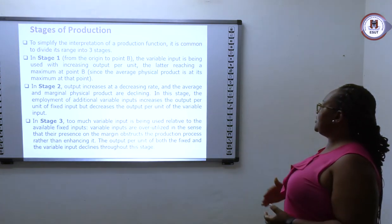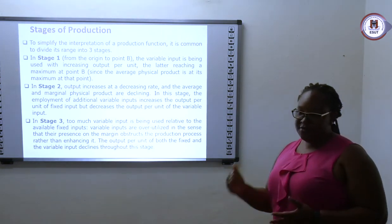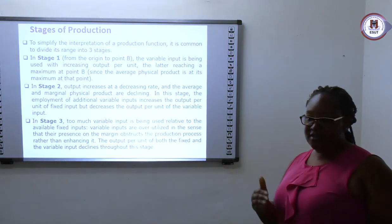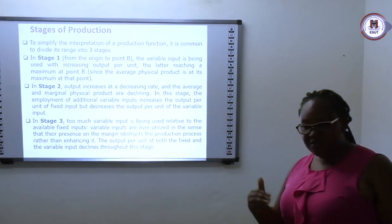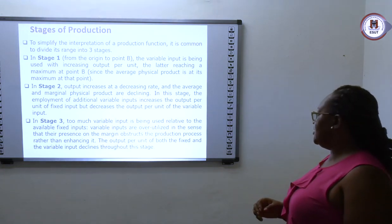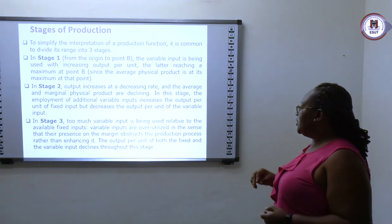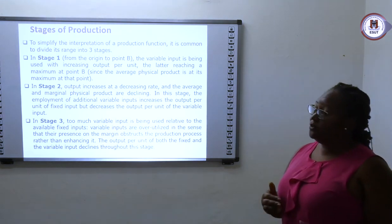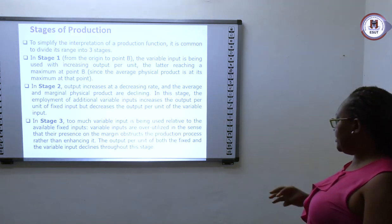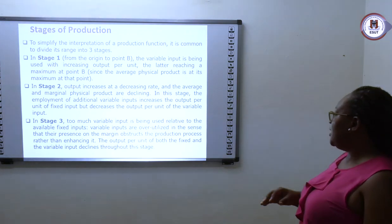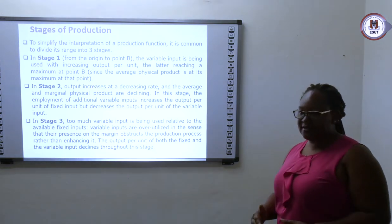In stage two, output increases at a decreasing rate. Even though output is still increasing, the rate at which it increased in stage one is not the rate at which it increases in stage two — it increases at a decreasing rate. In stage three, too much variable input is being used relative to the available fixed input. The output per unit of both fixed and variable inputs declines throughout this stage.